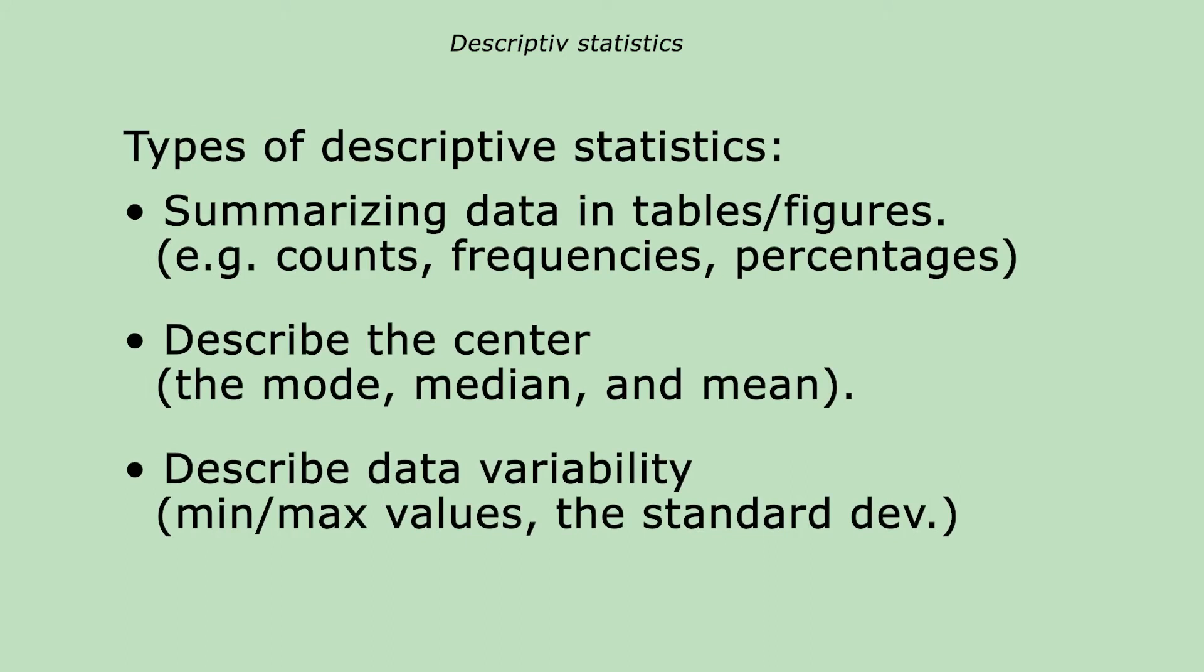There are different types of descriptive statistics. One type is about summarizing and presenting data in tables and figures. Another type is about finding and describing the center. Examples of such central tendencies are the mode, the median, and the mean.